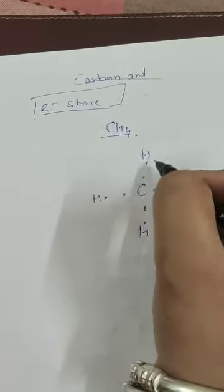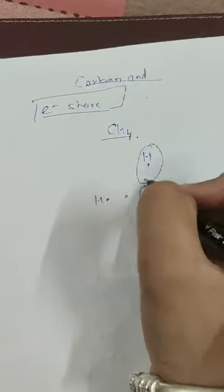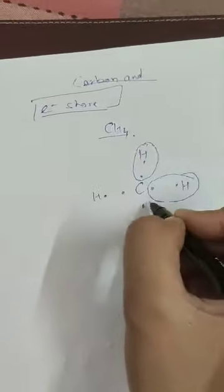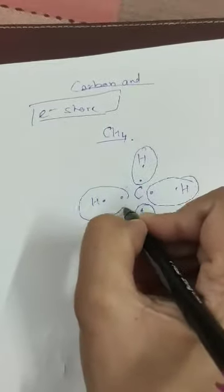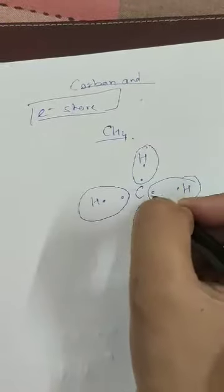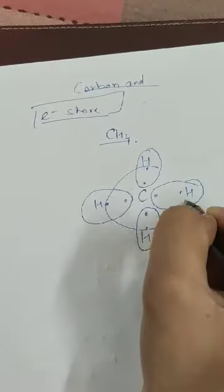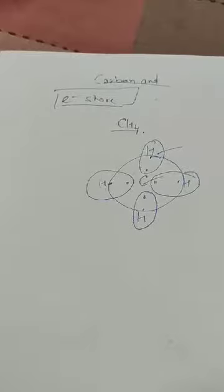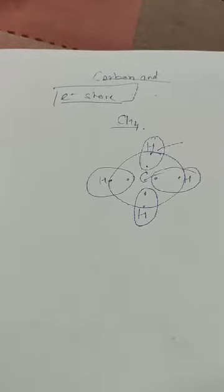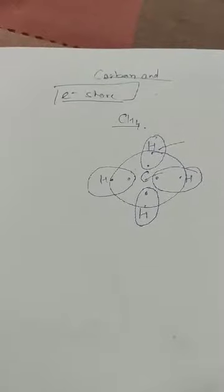A simple example: hydrogen will share one electron with carbon. By sharing, hydrogen attains the configuration of helium, whereas carbon completes its octet and becomes stable. This is covalent bonding — the bond formed by the mutual contribution and sharing of electrons between the participating atoms.